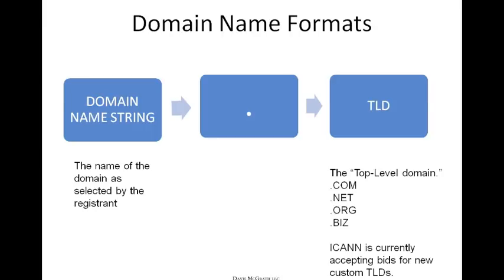There are others being used, such as .co. Currently ICANN is accepting bids for new custom TLDs. To the left of the TLD is the dot, and then the domain name string, which is the name of the domain as selected by the registrant.